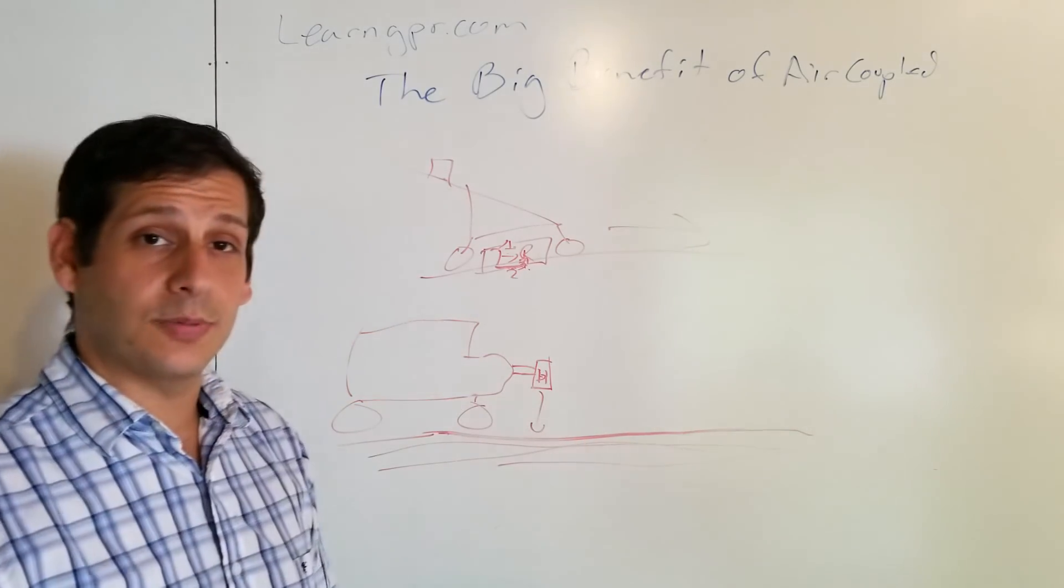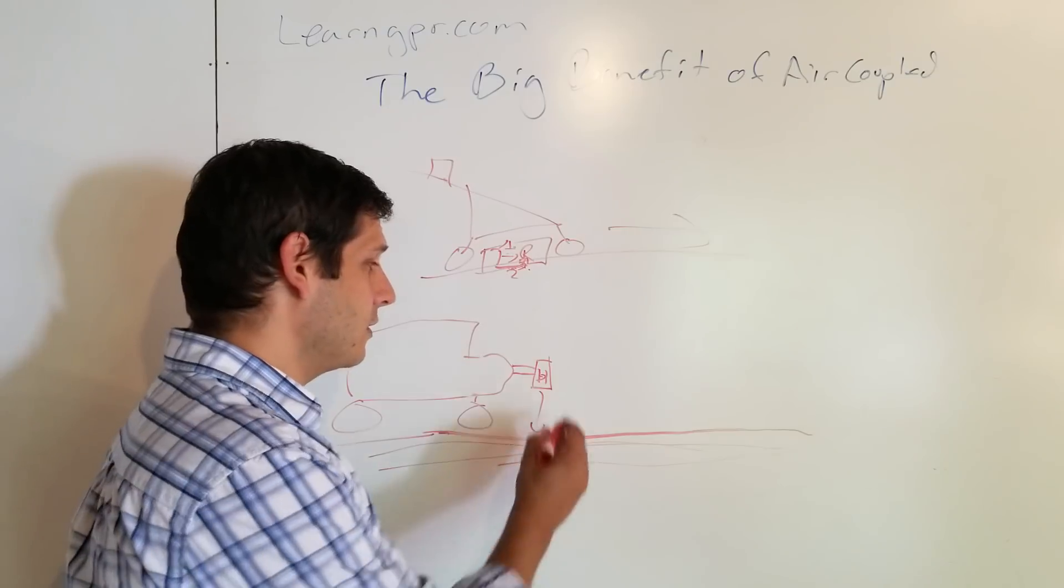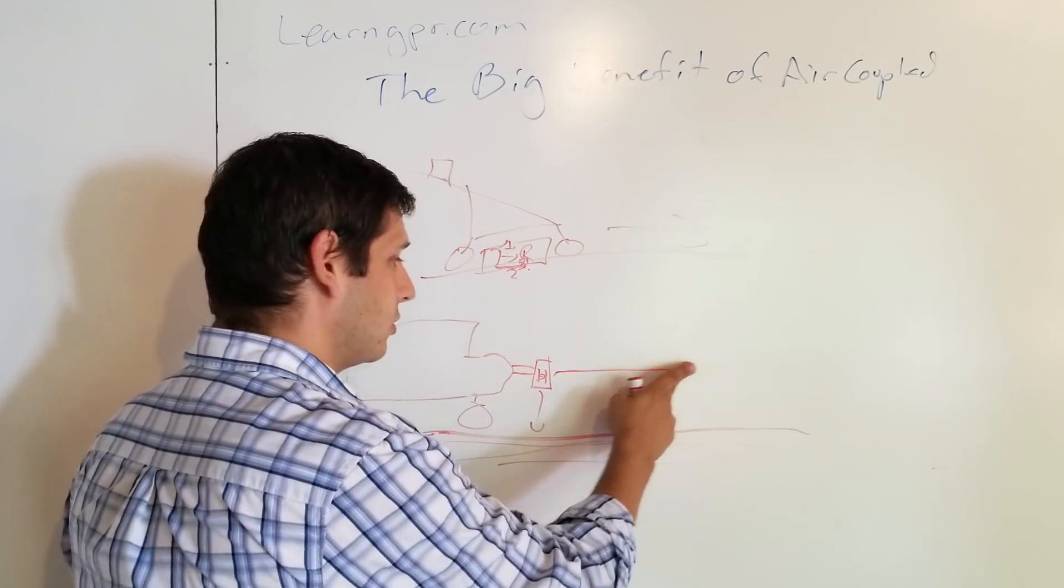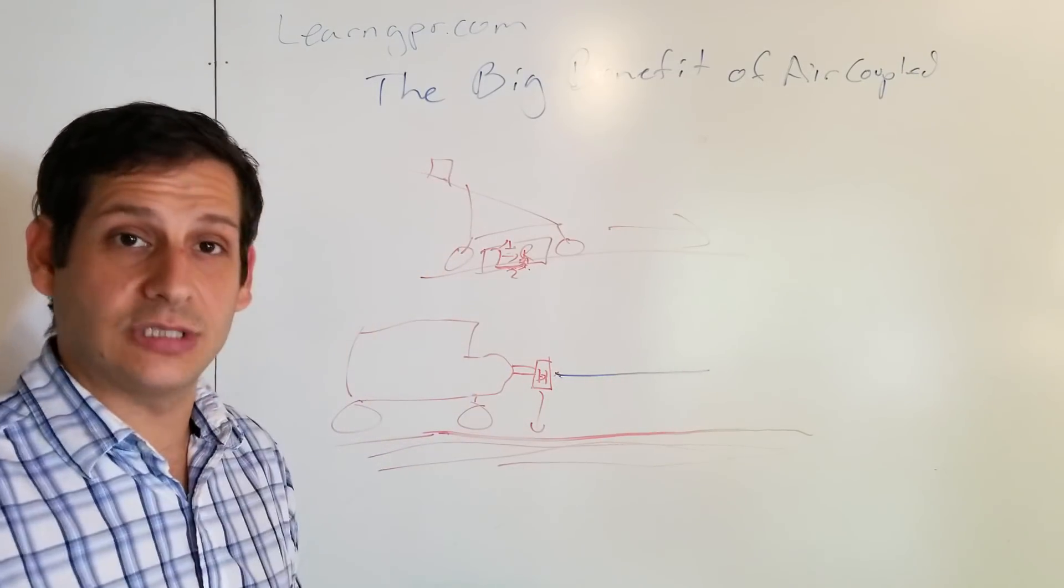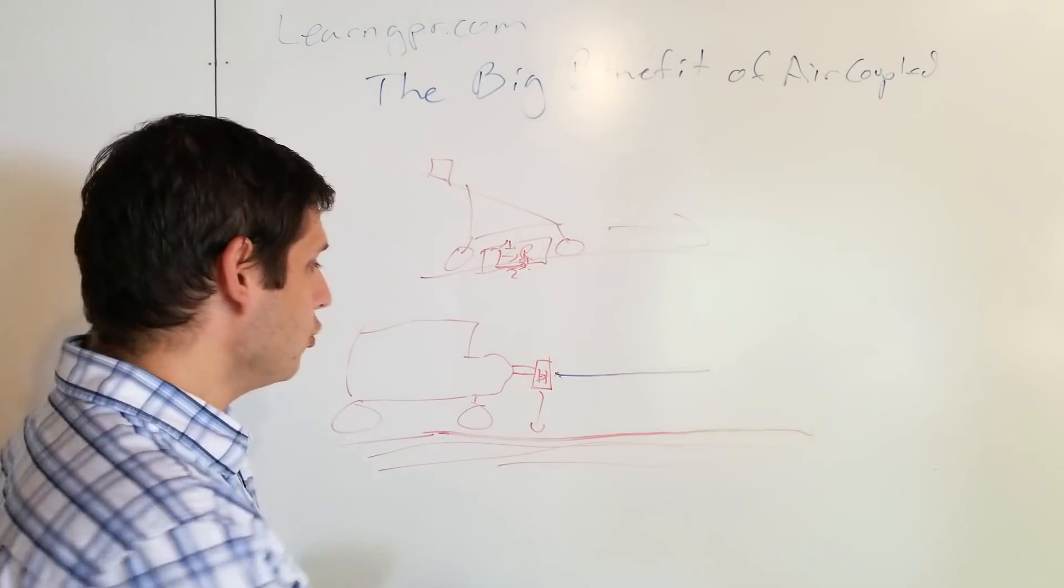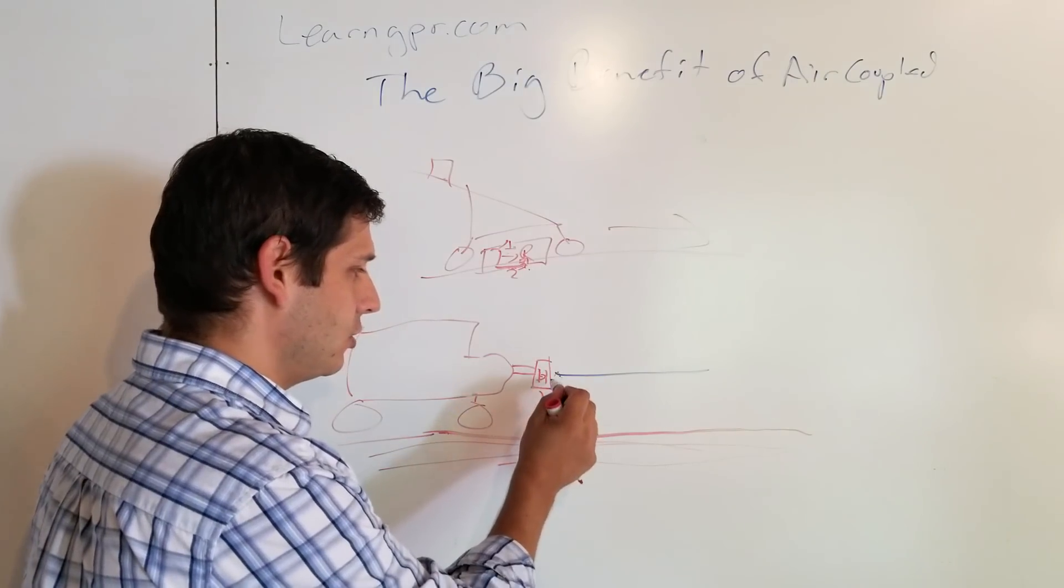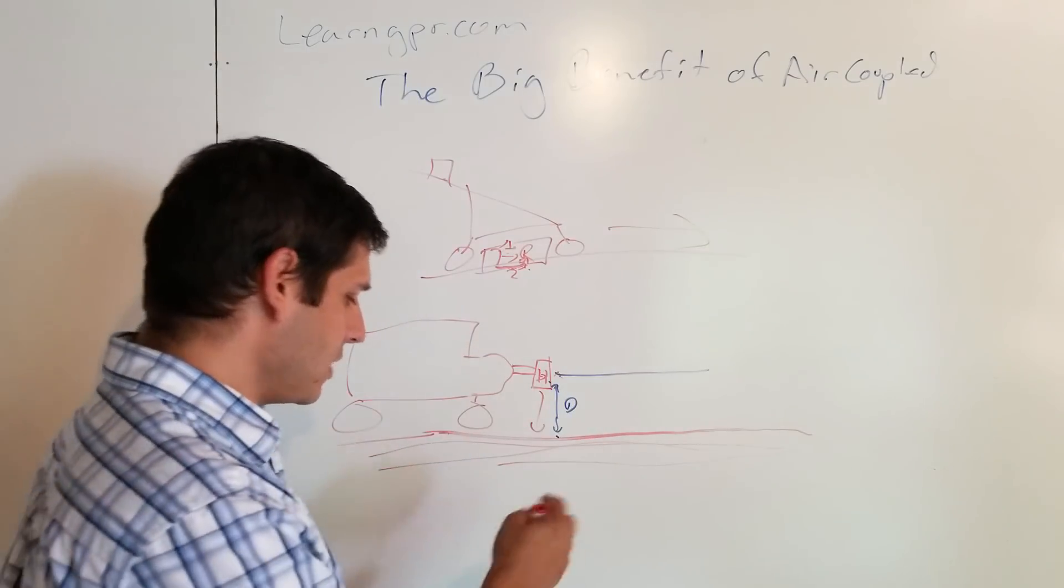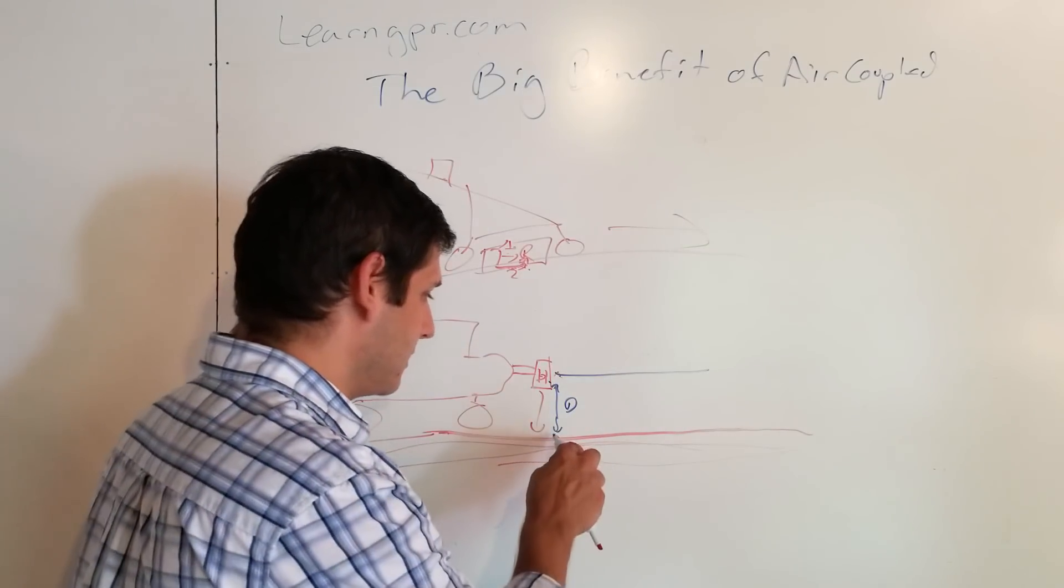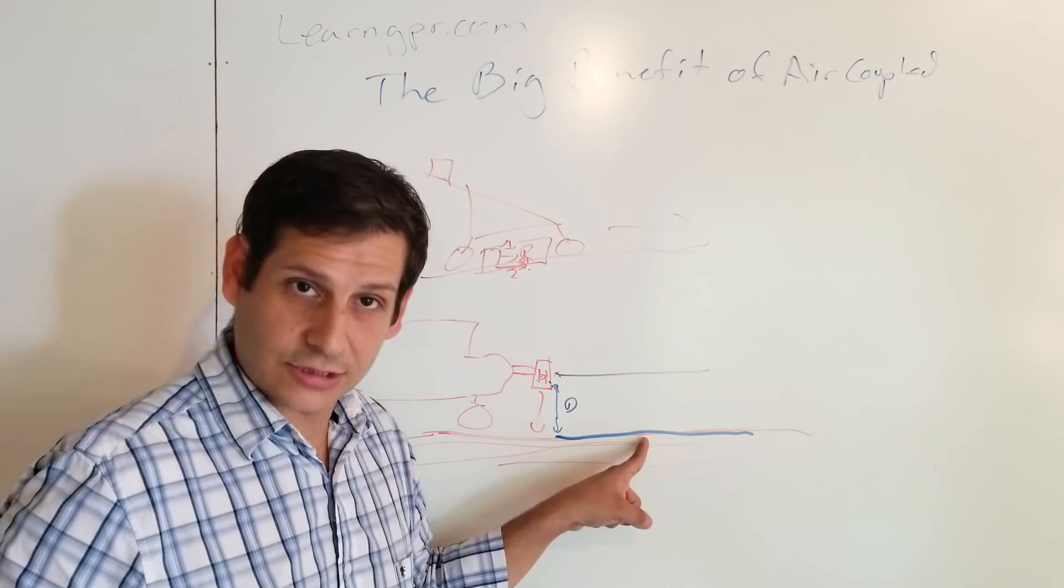So, what's the benefit of air coupling, or a big benefit of air coupling, is you get a direct wave, and that has a signal. I'll change colors here. That'll have a signal at time zero. Then, you can measure the distance between your antenna and the ground.